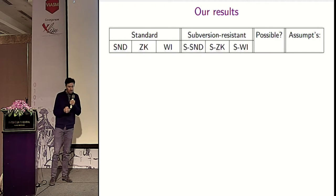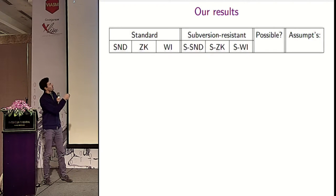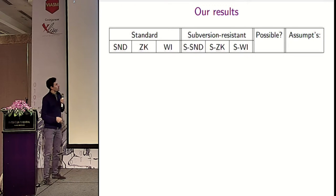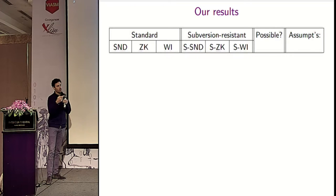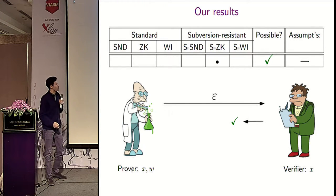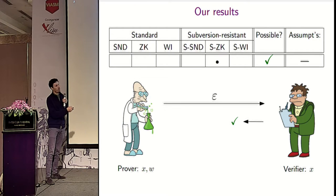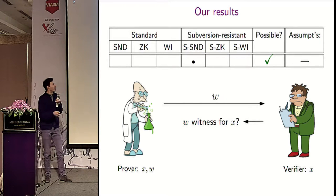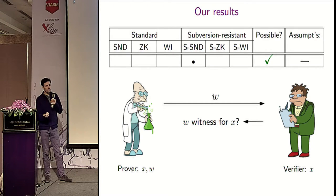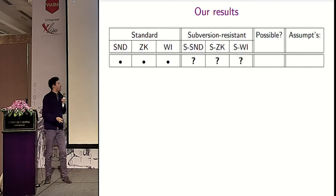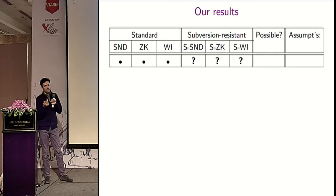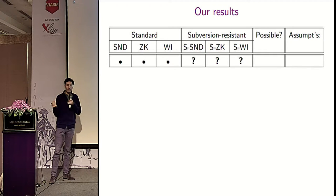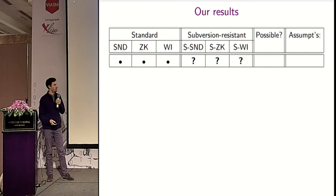We have more results. We defined three new subversion-resistant versions and analyze what can be achieved and under which assumptions. Some trivial observations: if we want subversion zero knowledge we could define proofs as the empty string and have the verifier always accept — that gives subversion zero knowledge but it is not sound. Similarly, we could achieve subversion soundness by just sending the witness and having the verifier check himself, but that would not be zero knowledge. What we are really interested in is whether existing schemes satisfying classical notions can be upgraded to also provide subversion-resistant security.